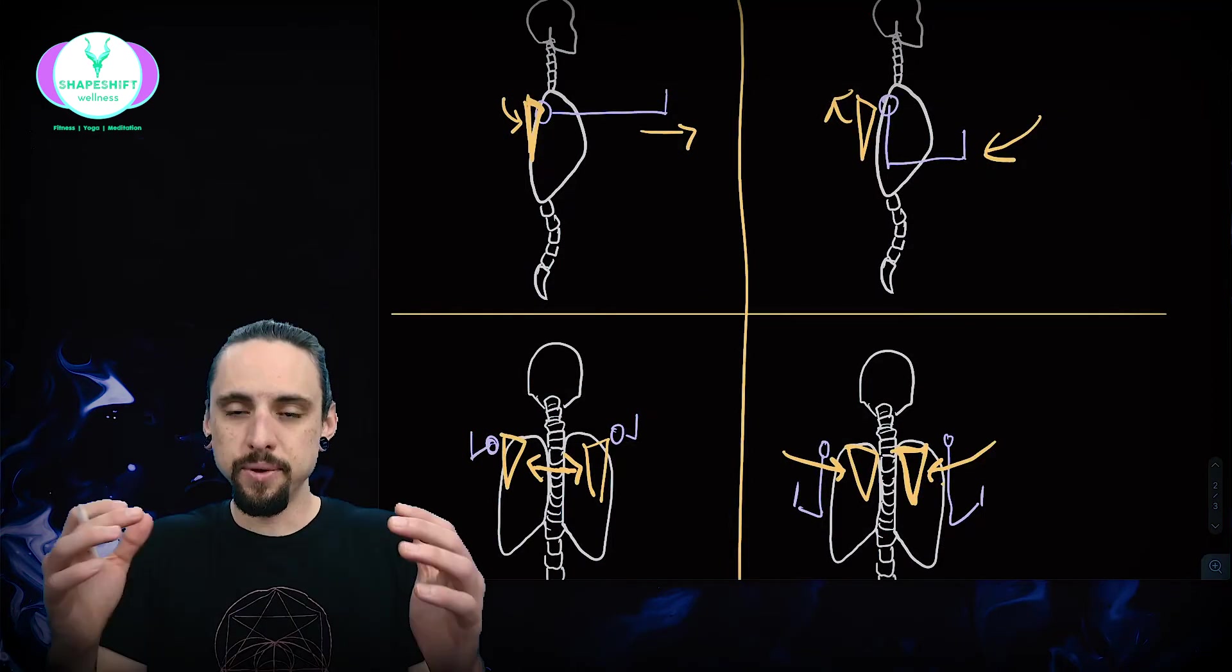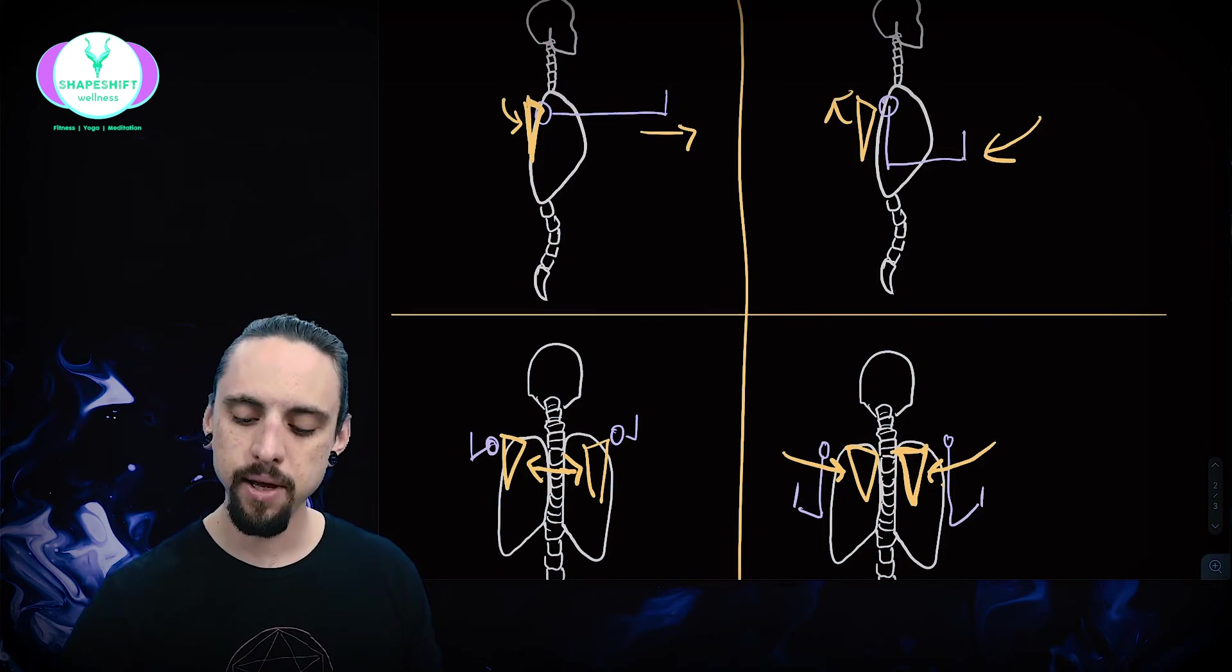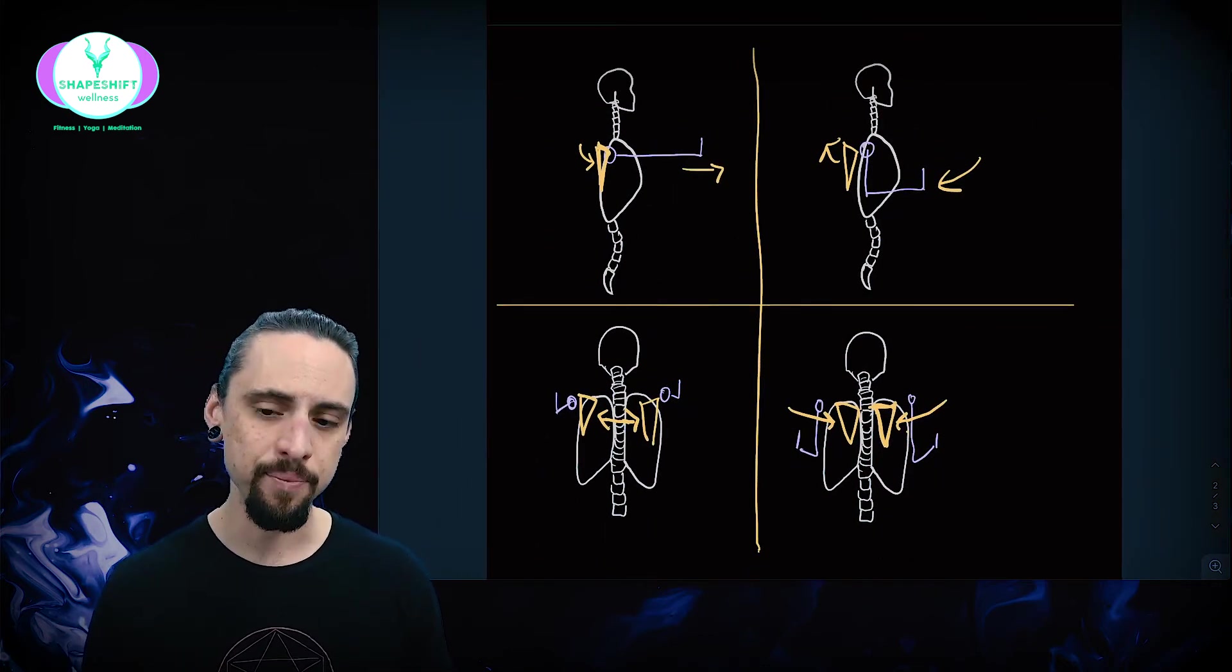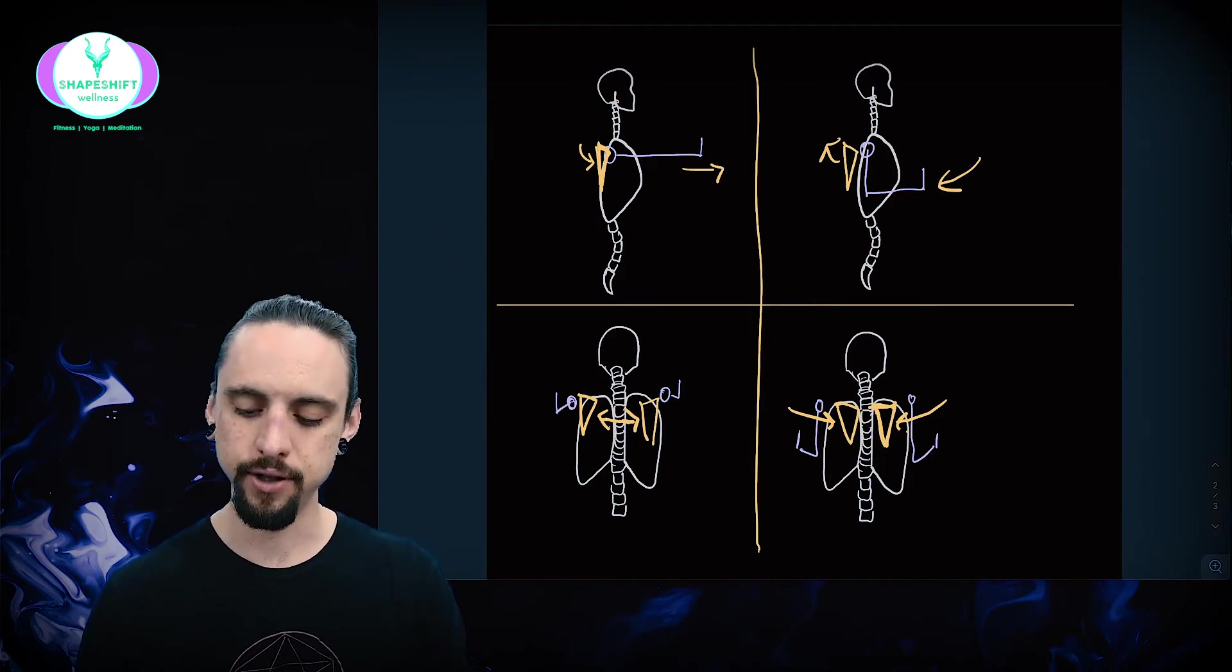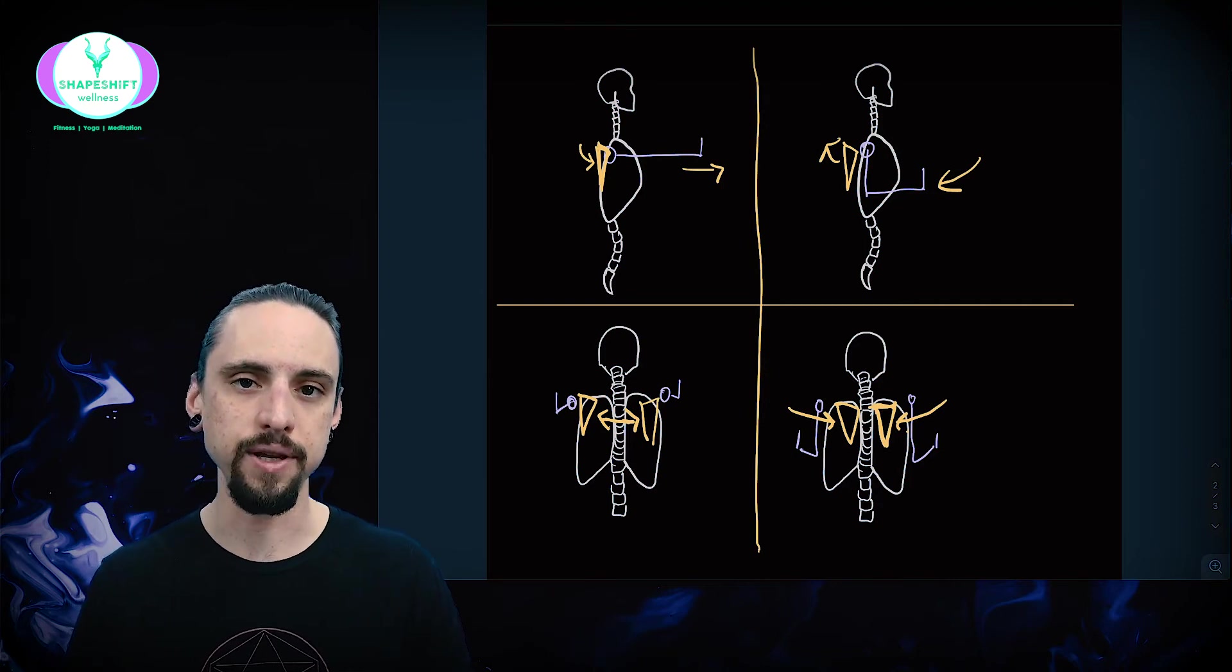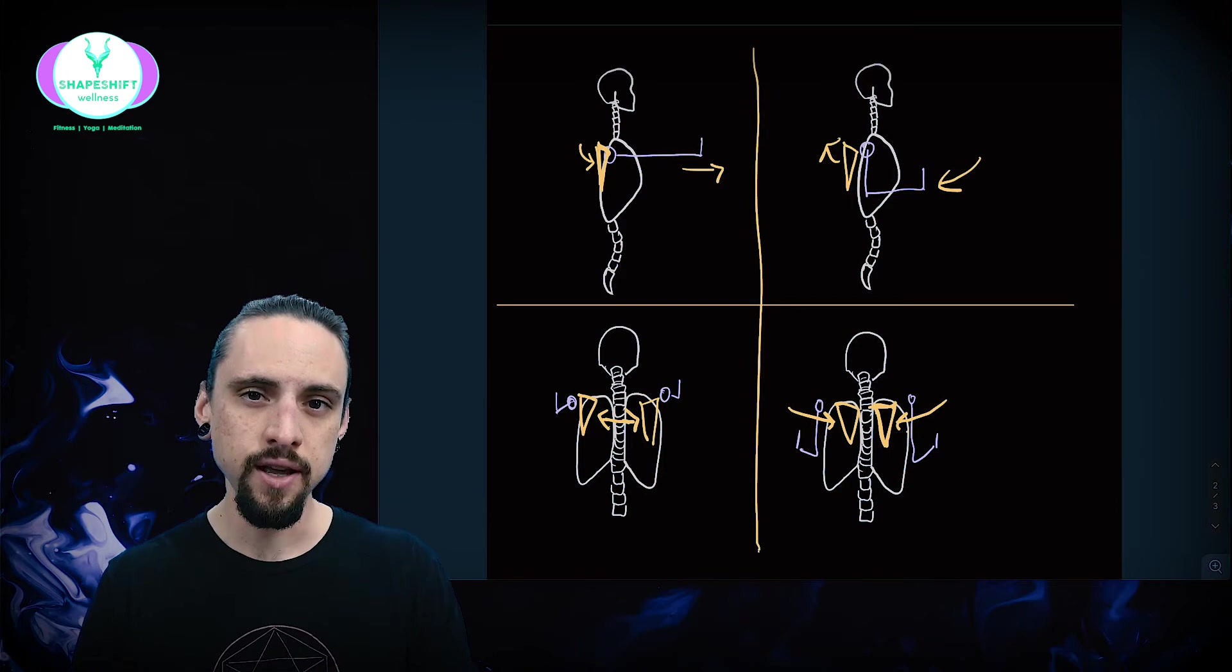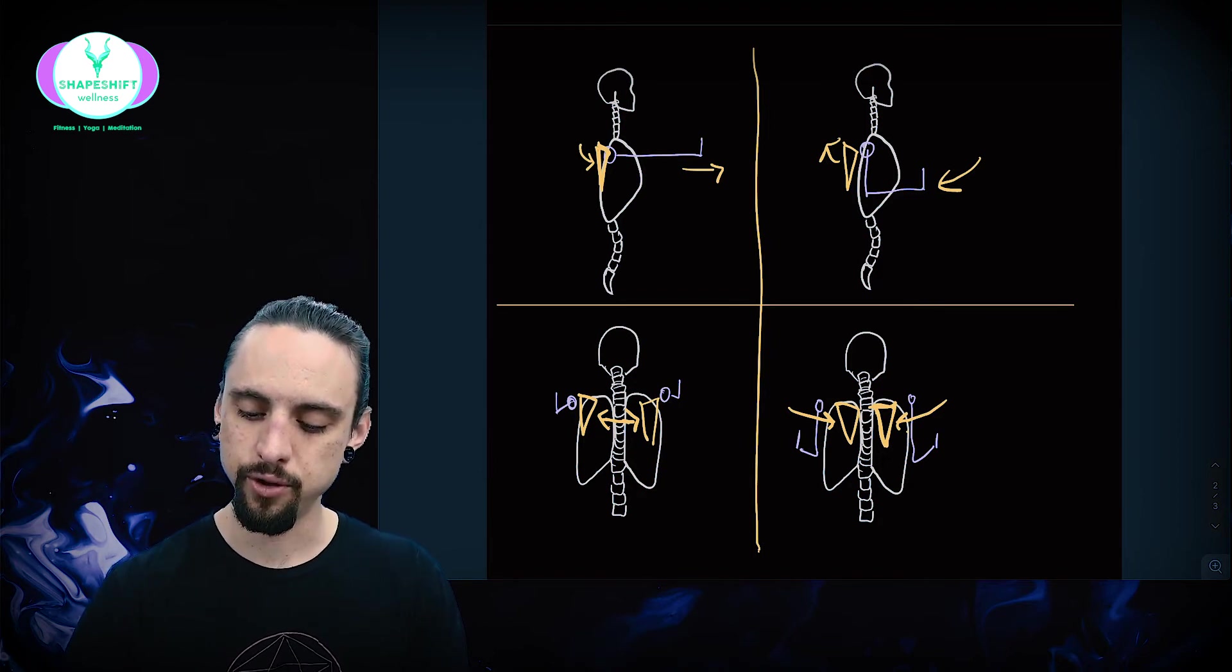As we draw the elbows back, the shoulder blades naturally want to go back. There's some argument that you should just keep them in that back position the whole time, but the problem is that the glenoid fossa—part of the reason that the shoulder blade has to go with the arm is because the glenoid fossa is going to continue to point in whichever direction the arm goes, and that's going to allow you maximum surface area for the glenohumeral joint.